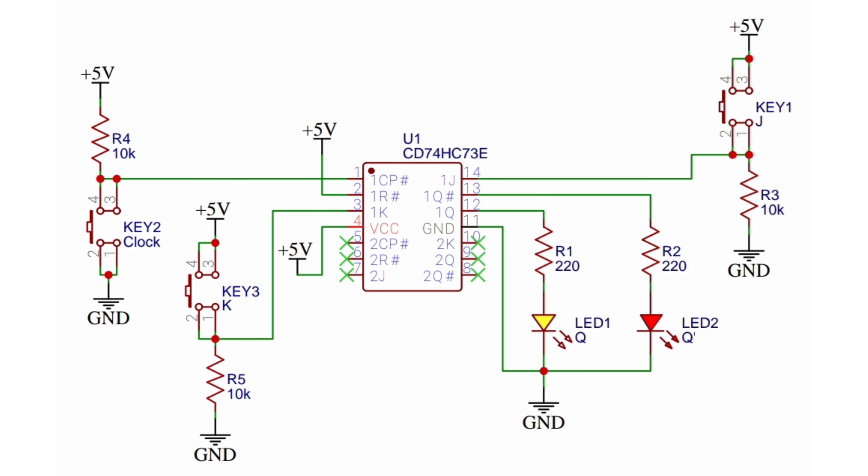And another push switch with another 10 kilo-ohm pulldown resistor is connected to the K input of the first JK flip-flop. Another push switch with a 10 kilo-ohm pull-up resistor is connected to the clock input of the first JK flip-flop.